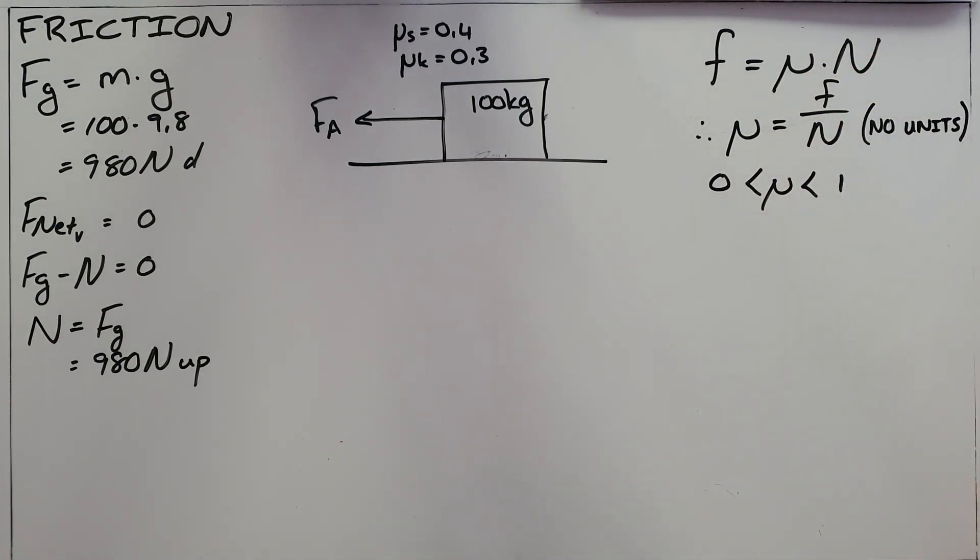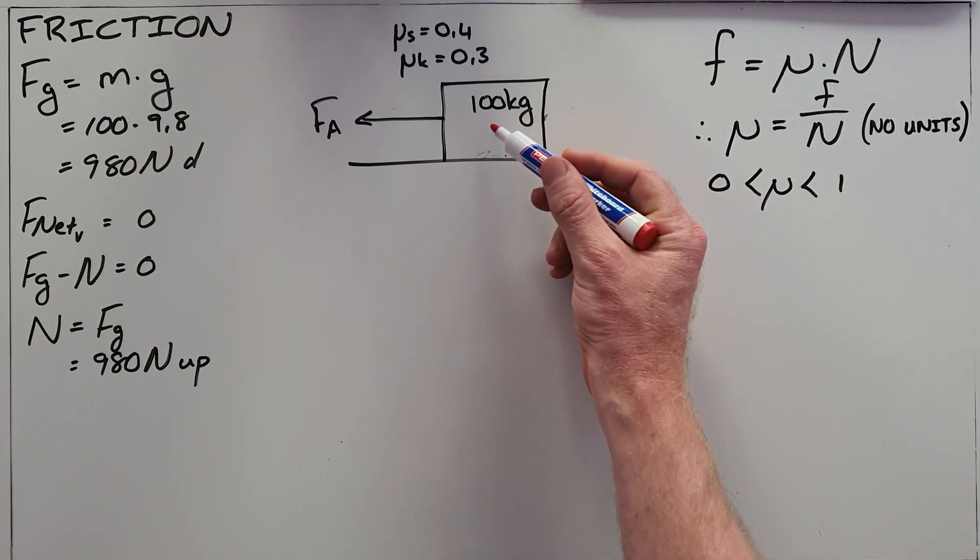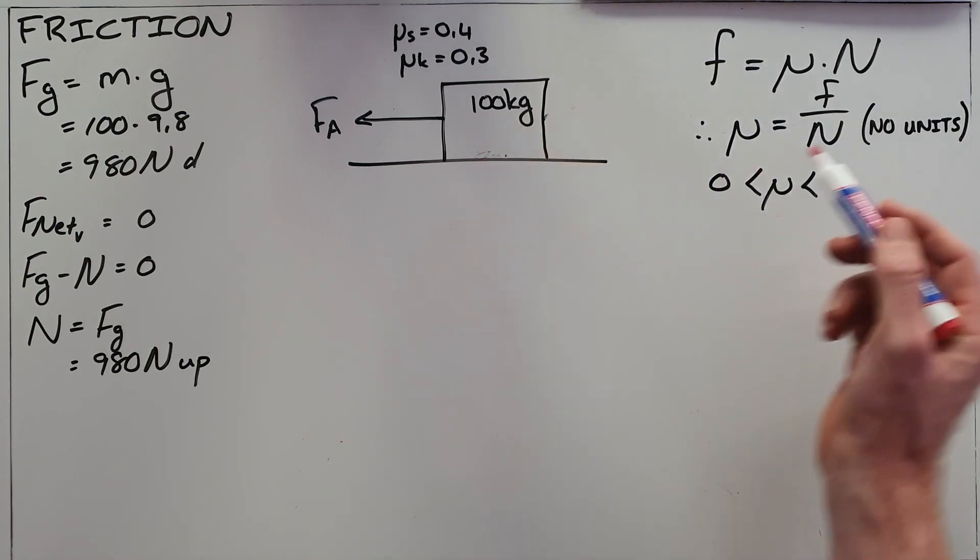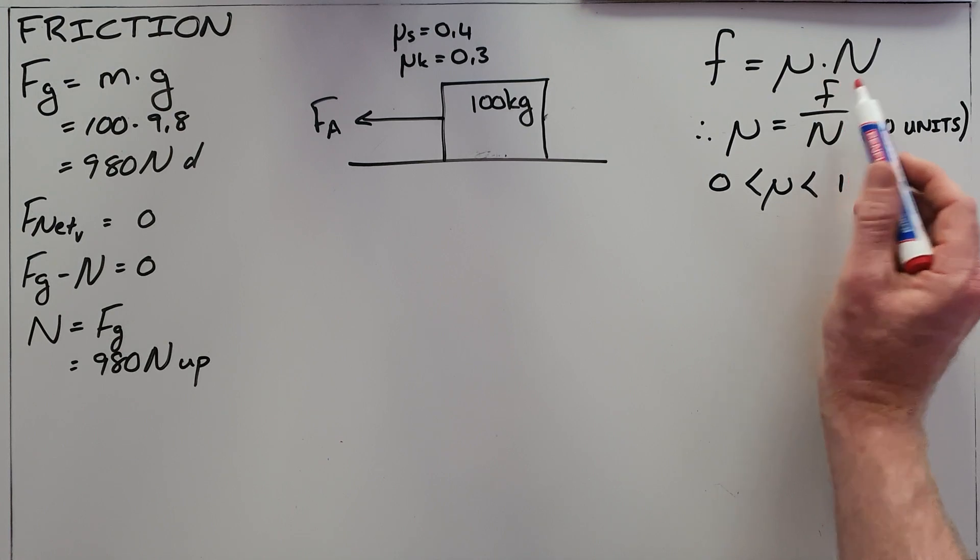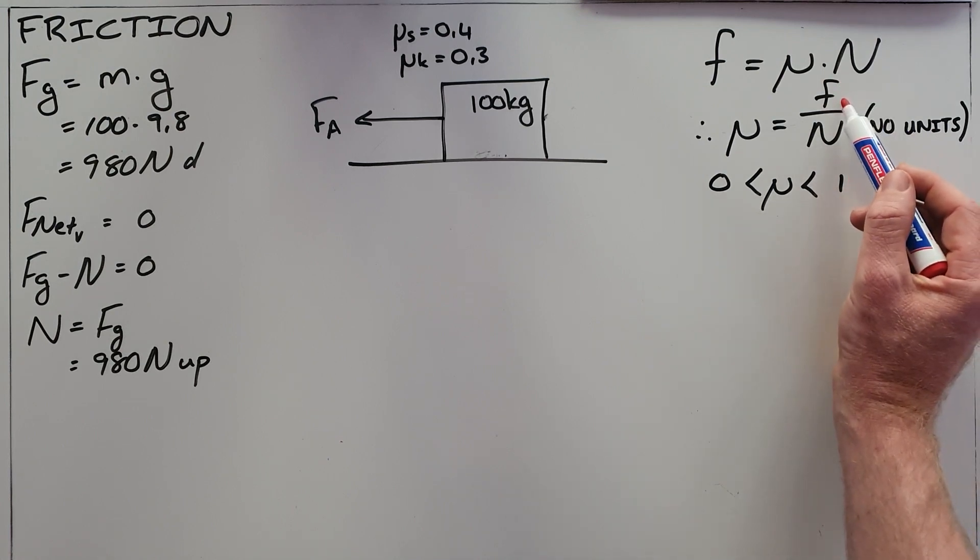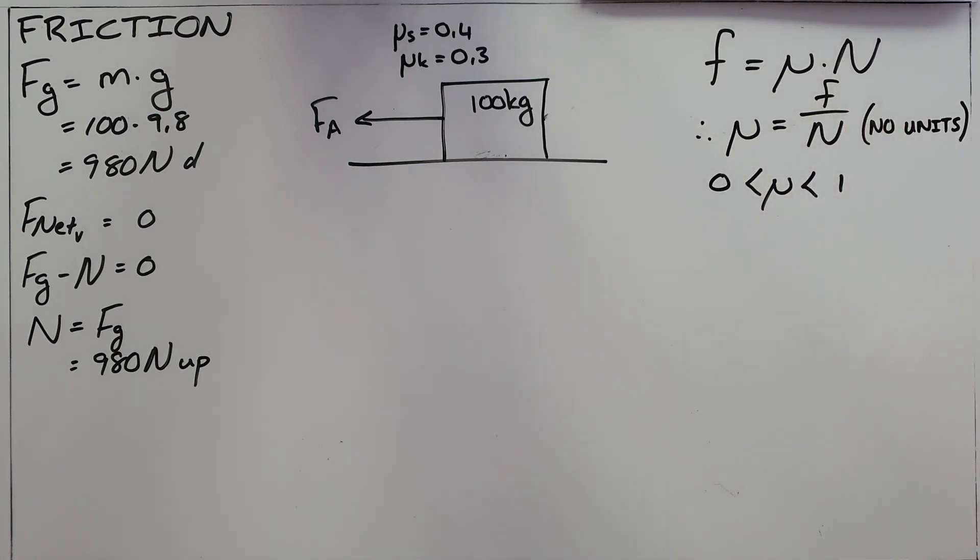The coefficient of friction is specific to the interaction between one object and its surface and can be calculated by taking the ratio of the frictional force between those two objects and the normal force that the surface exerts on that object.